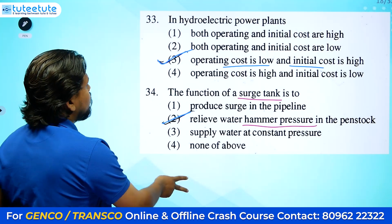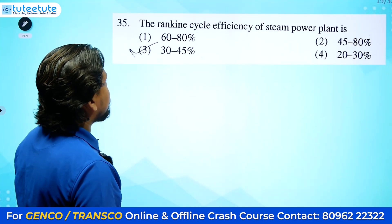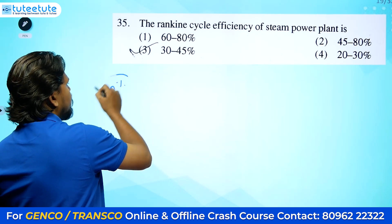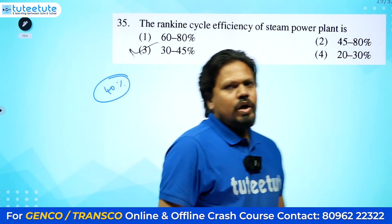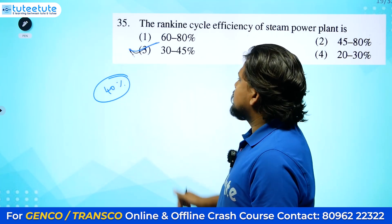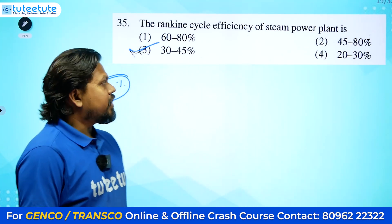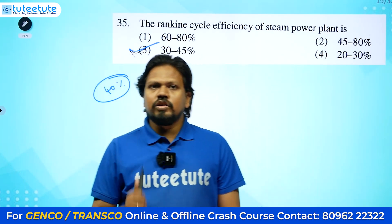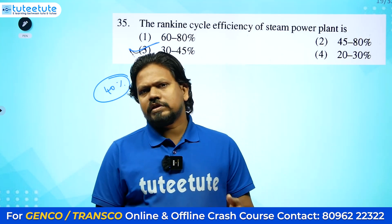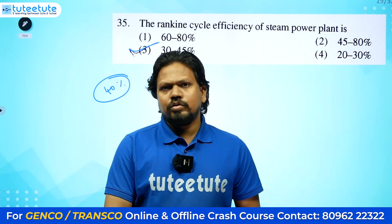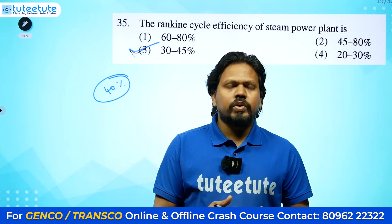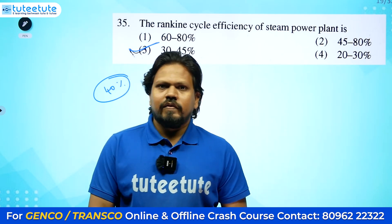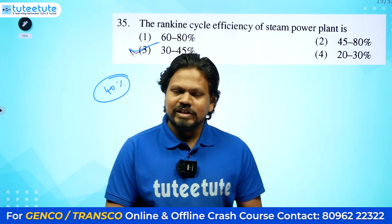The Rankine cycle efficiency of steam power plants is typically 30 to 45%. That covers 10 questions from power plant engineering. Previously we covered more than 18 questions from power systems. In the next session we will cover measurement questions, and one by one we will go through each subject. All the best, thank you.